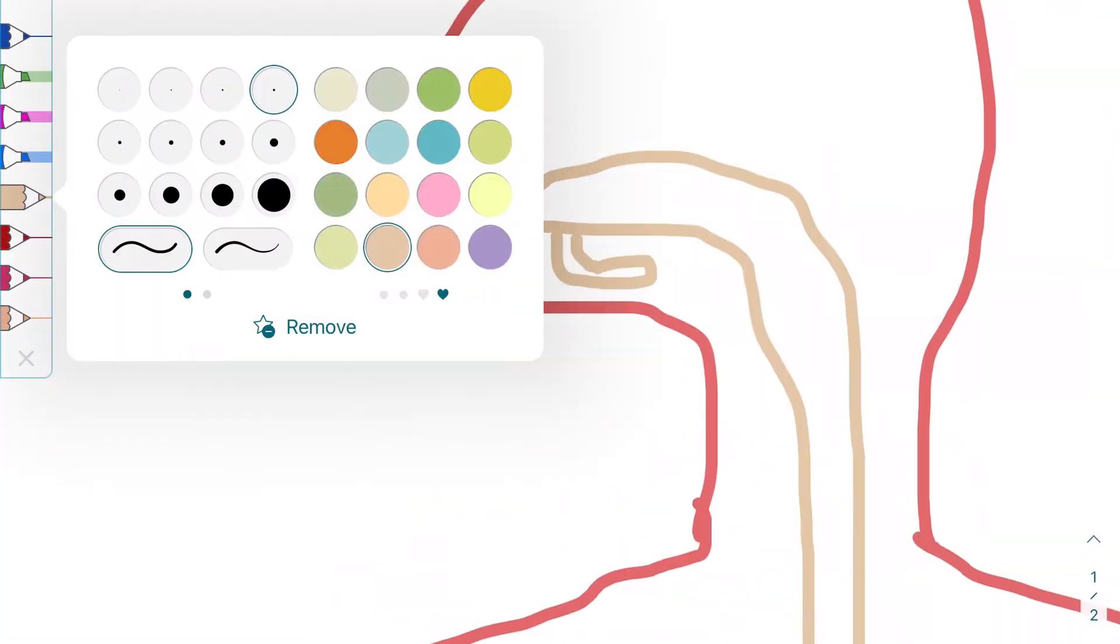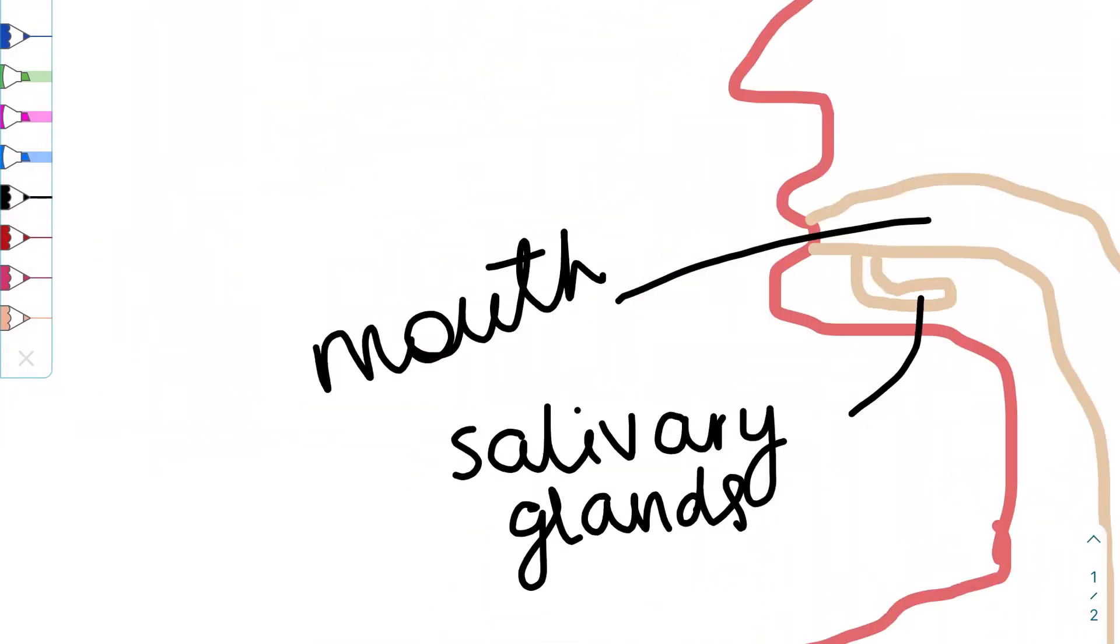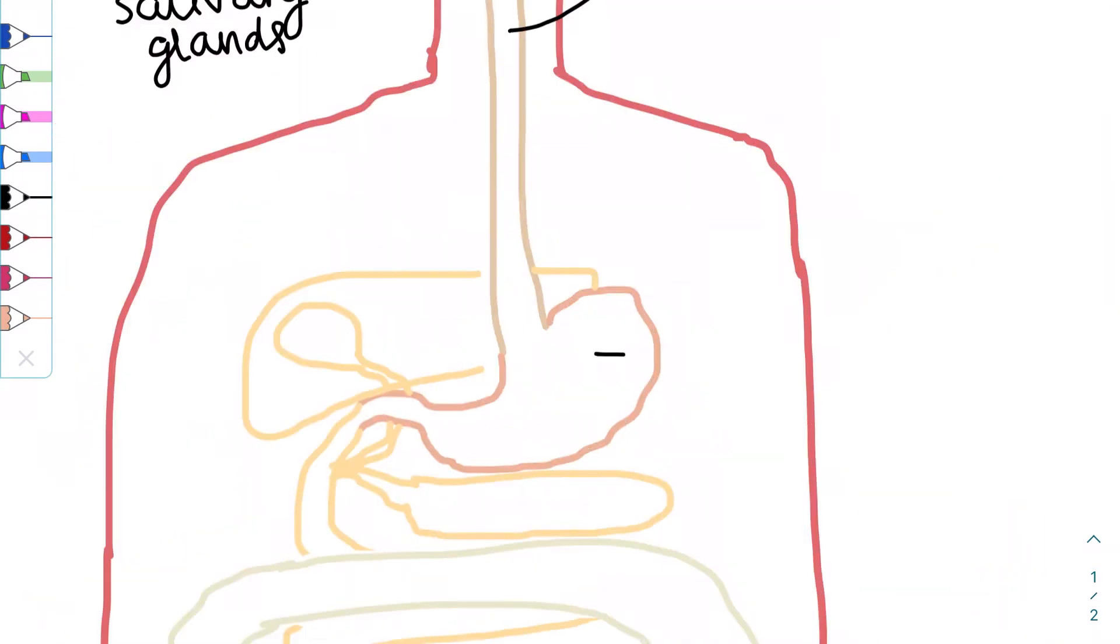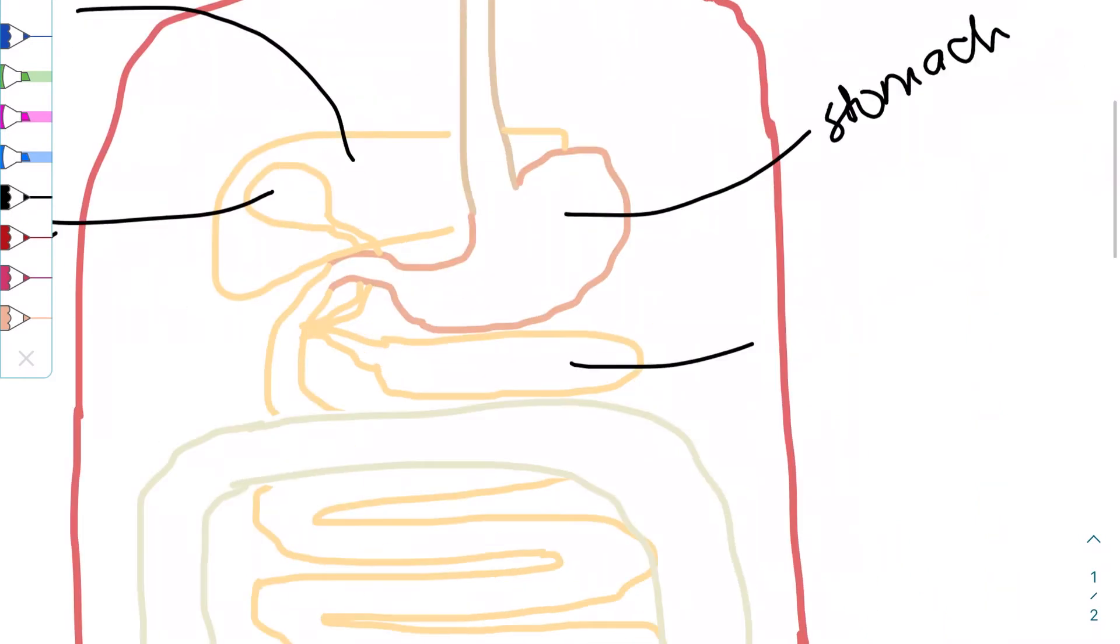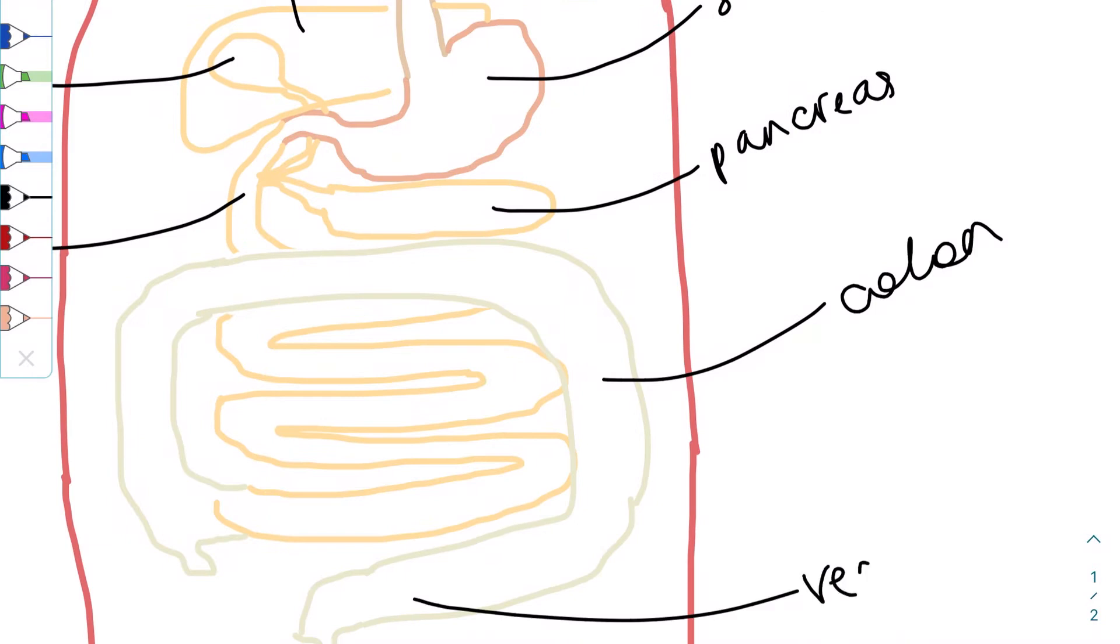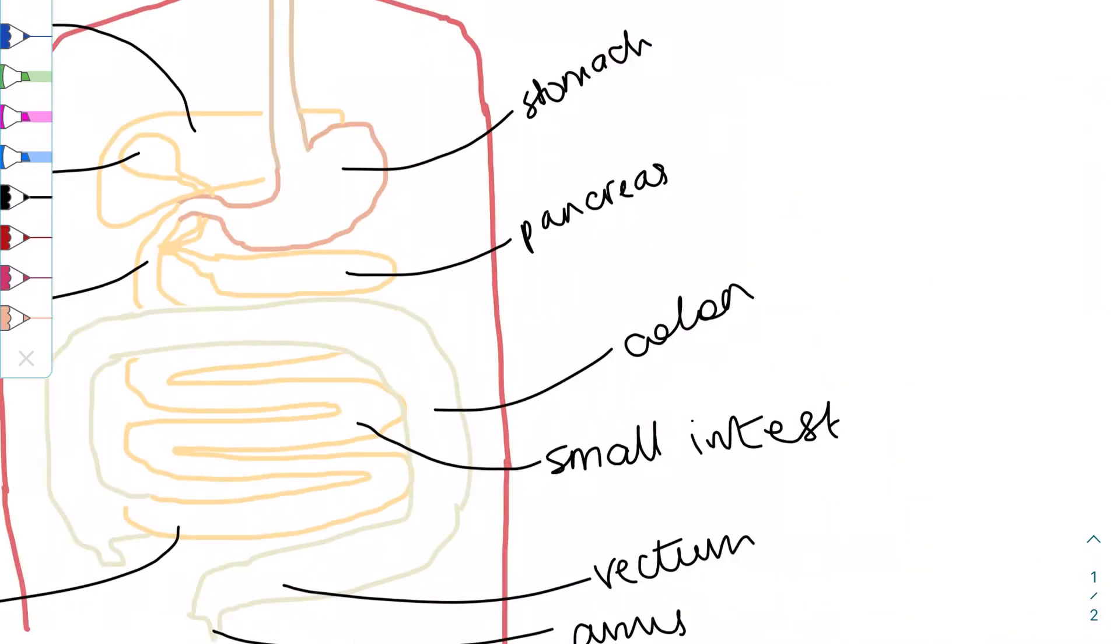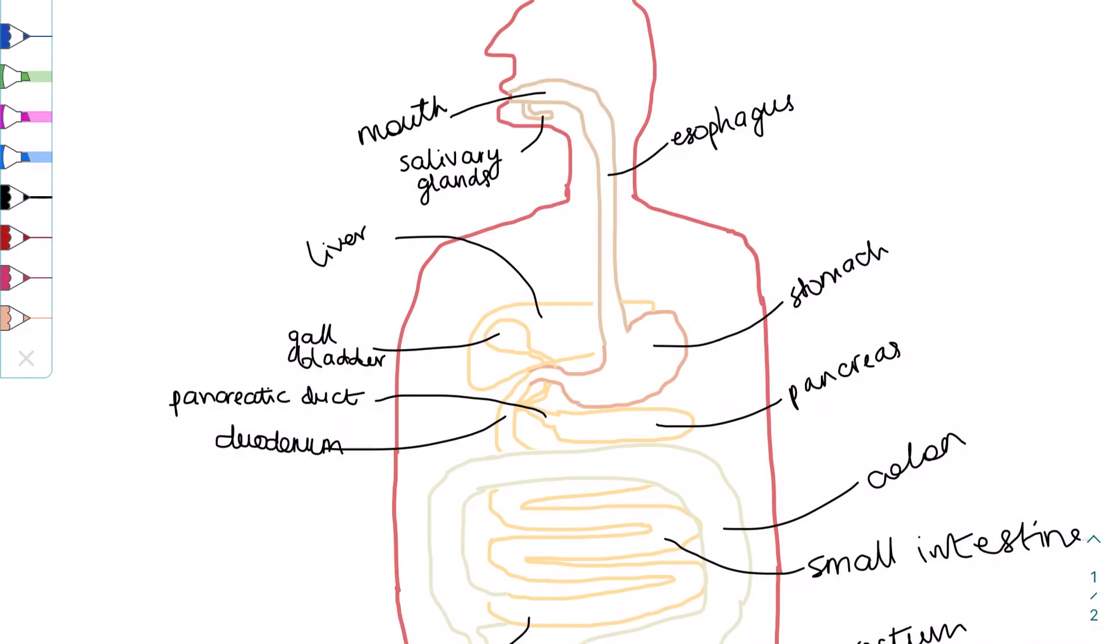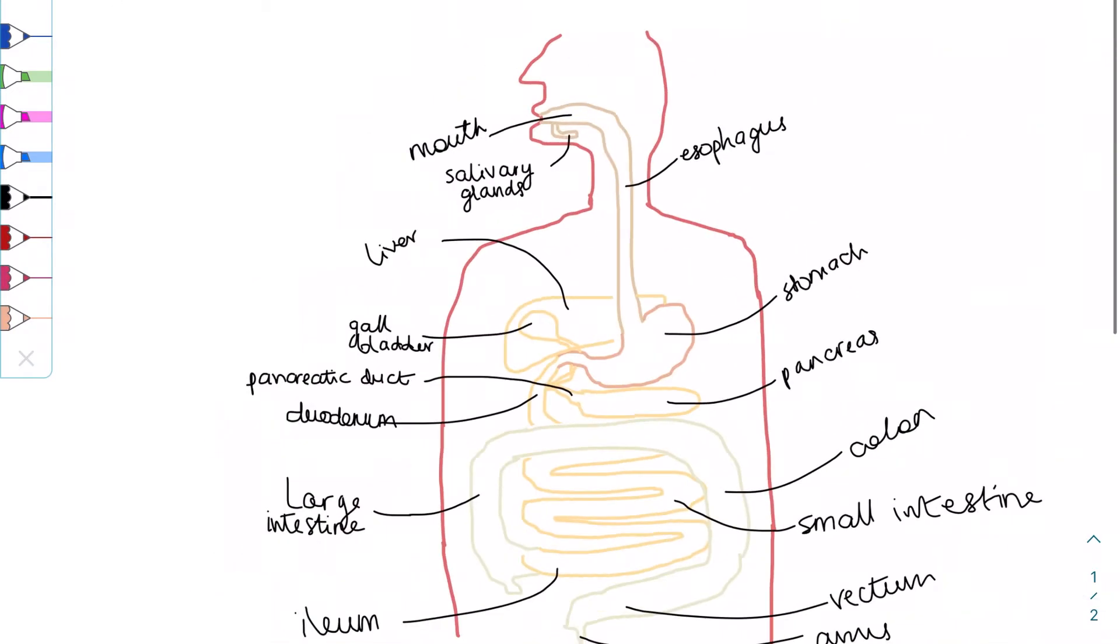The digestive system is made up of two components: the alimentary canal, which is essentially the tube through which food passes, and the accessory glands, which secrete the necessary digestive juices or hormones for food to be digested, absorbed or assimilated properly. The alimentary canal is made up of the mouth, esophagus, stomach, small intestine and large intestine. The accessory glands are the salivary glands, liver and gallbladder, and the pancreas.